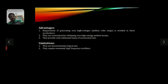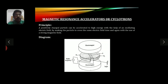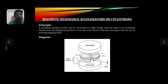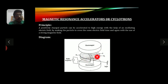Now let's move on to magnetic resonance accelerators, also called cyclotrons. The principle is: a positively charged particle can be accelerated to high energy with the help of an oscillating electric field by making the particle cross the same electric field again and again, with the use of a strong magnetic field. Unlike the linear accelerator, the cyclotron uses both an electric field and a magnetic field.